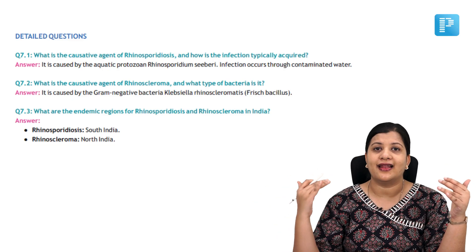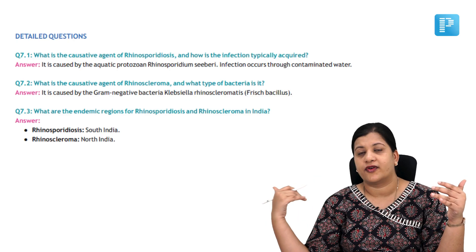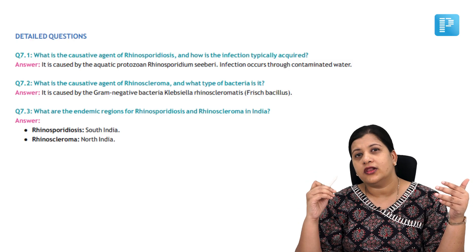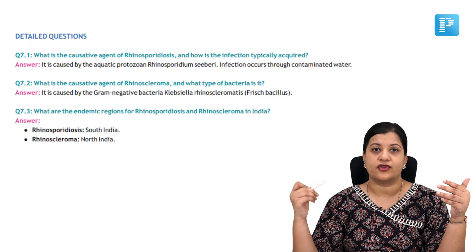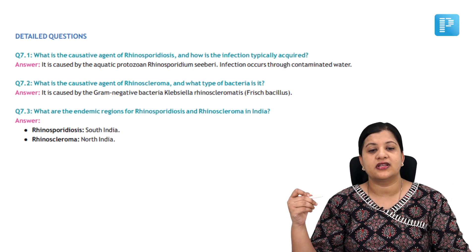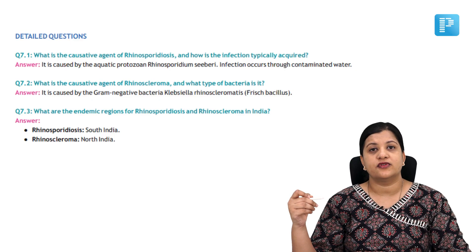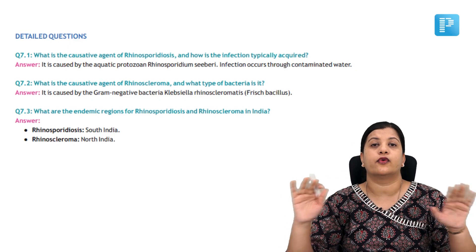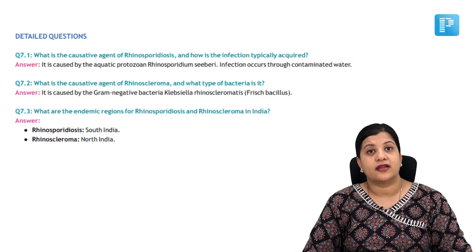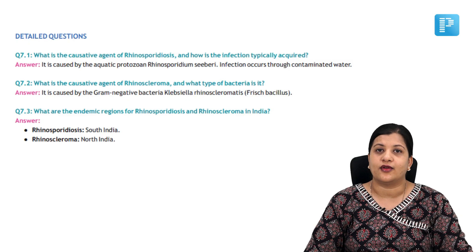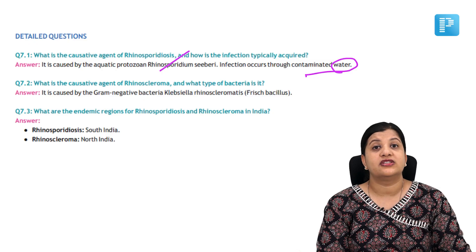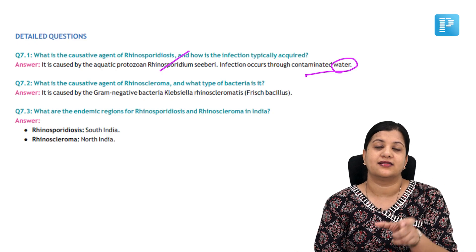When we are in the last part of our learning, we want to really analyze ourselves — do I actually recall all the concepts taught during the video lectures or not? Here we see the first question: what is the causative organism for rhinosporidiosis and how is the infection typically acquired? You're supposed to cover the answer with a paper and try to recall yourself. You'll be able to recall that the causative organism is an aquatic protozoan, Rhinosporidium seeberi, and the mode of infection is through water. If you've been able to recall this, you know that answer is consolidated in your long-term memory.